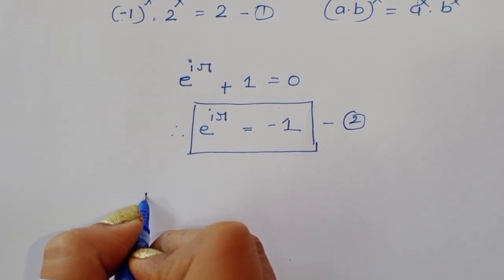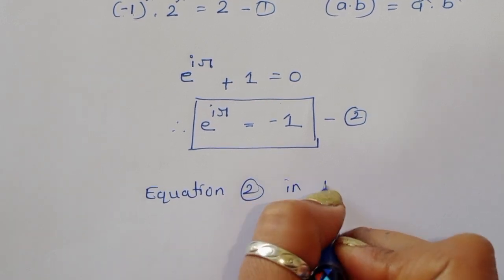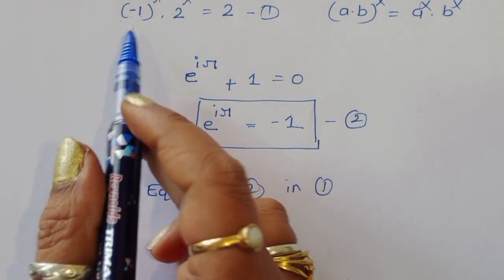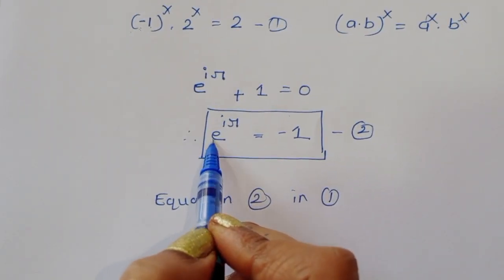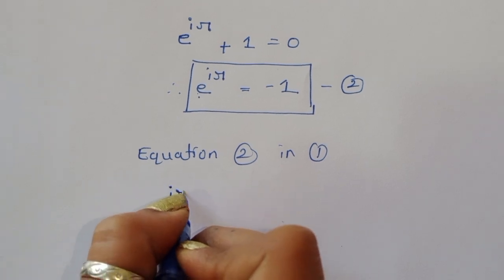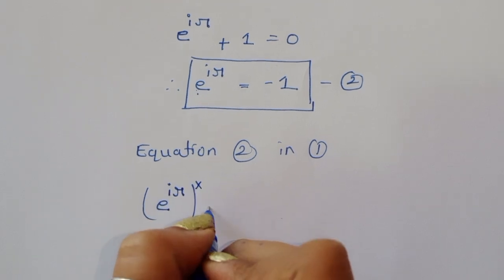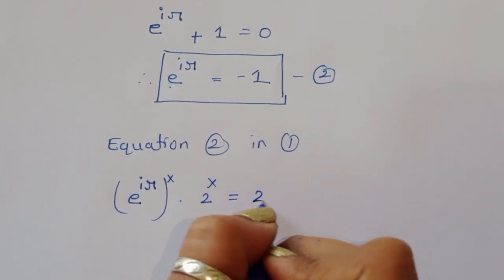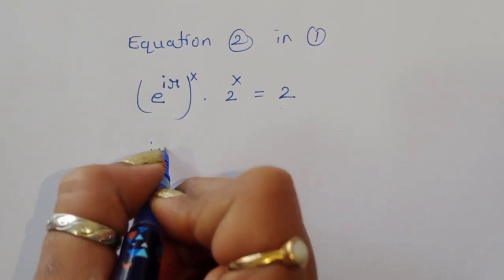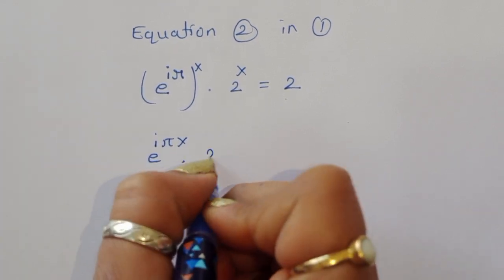Substituting equation 2 into equation 1, in place of -1 we write e^(iπ). So (e^(iπ))^x × 2^x = 2, which gives us e^(iπx) × 2^x = 2.